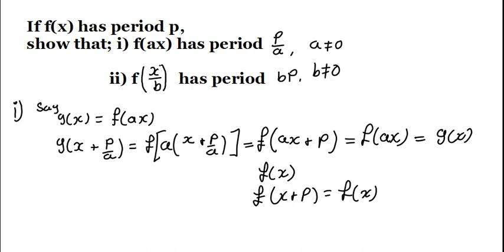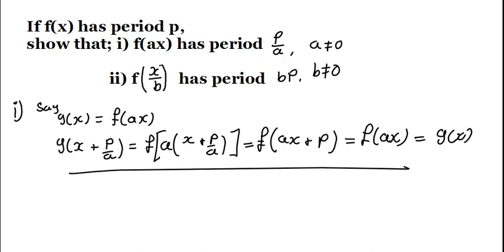So now, having understood this, how and where is this helpful in terms of answering this question that we are looking for here? How is this one going to help me? So because I have to show that this f(ax) has a period p/a. That's what I have to show. But look at what we have done here and understood.